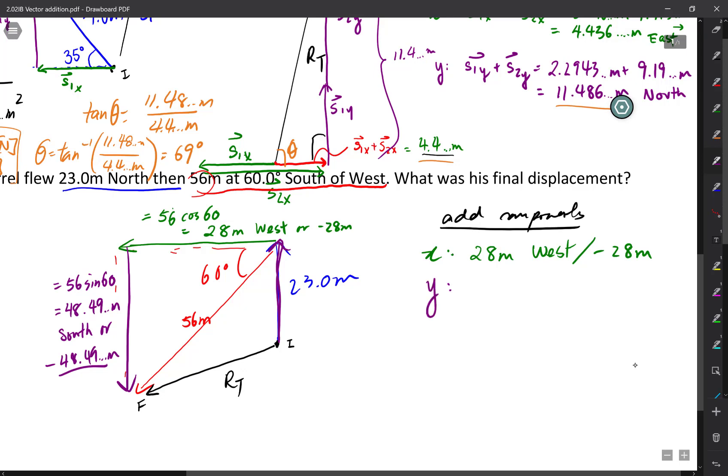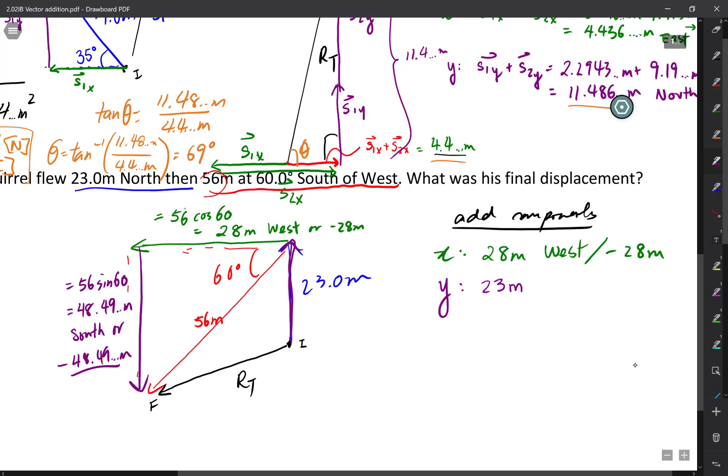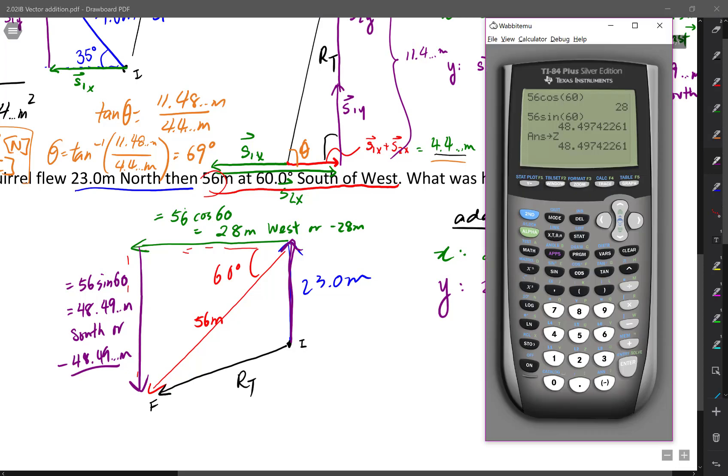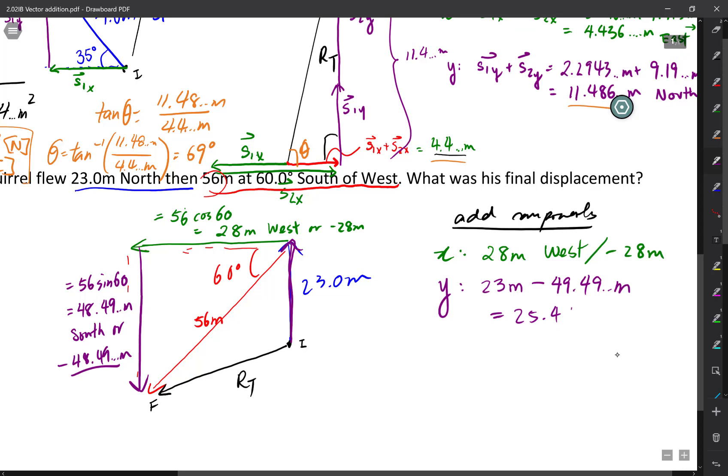In my y direction, however, I have two vectors, one going north, then the second one going south, which means when I'm adding them, I'm going to make sure I have my directions very clearly labeled. So first I go 23 meters north, and I'm going to keep that as positive because north is positive, and I'm going to subtract the 49.49 dot dot dot meters because it's going south. It's going in the opposite direction. After I subtract the two, I get 23 minus my answer. This gives me 25.497 dot dot dot. This is south because on my calculator it shows up as a negative sign, which means another way to write this is negative 25.497 dot dot dot meters.